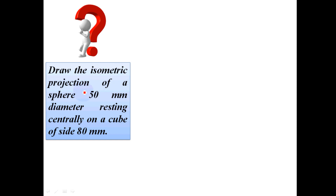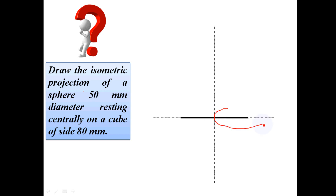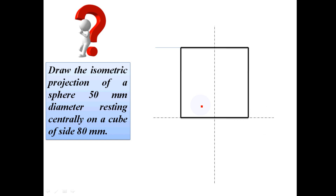We will draw the orthographic projection — front view and top view. This is the front view of the cube. The sphere is not shown separately; it is in the center position. The radius is 25mm, which is the center of this point.